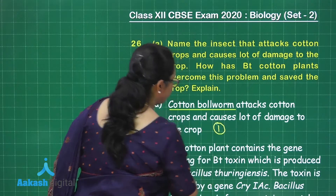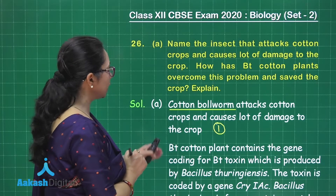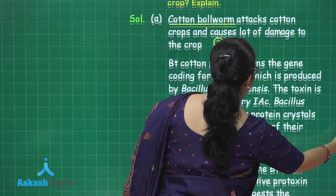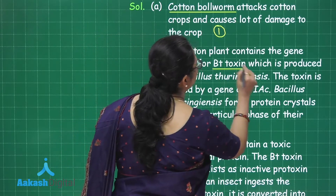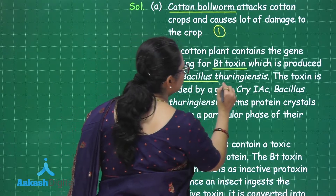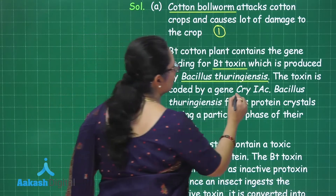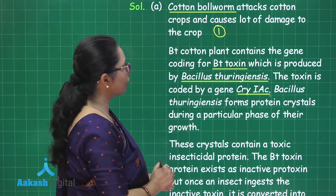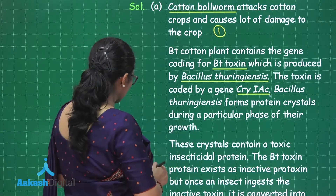BT cotton plants contain a gene coding for BT toxin. This gene is derived from Bacillus thuringiensis, and the toxin is coded by the gene cry 1AC. Bacillus thuringiensis forms protein crystals during a particular phase of its growth. This part is worth one mark.